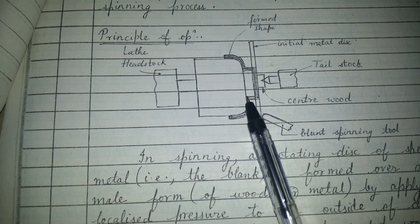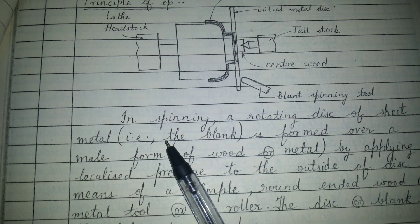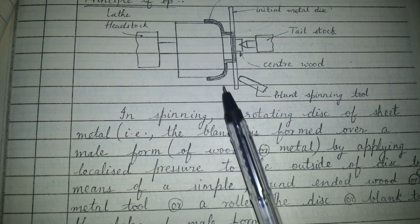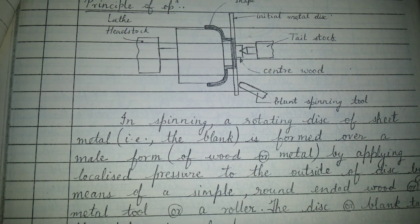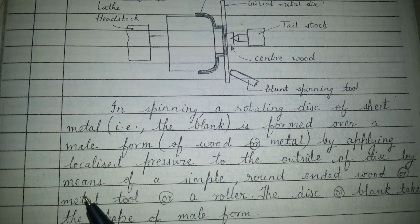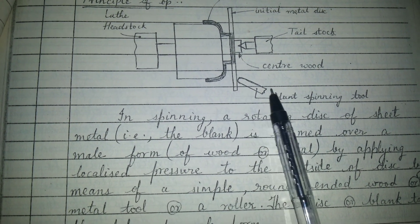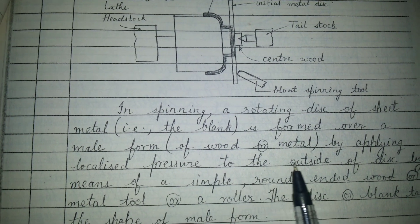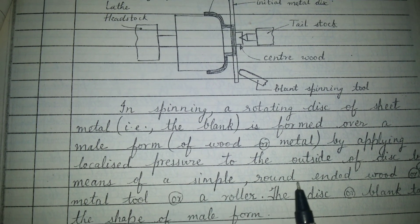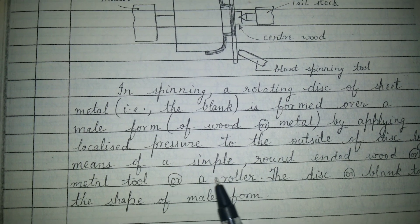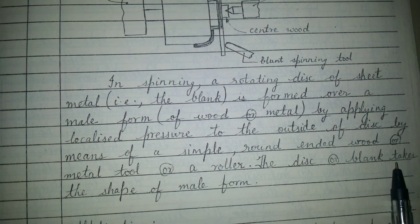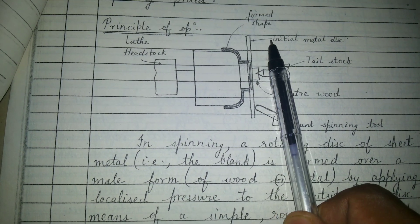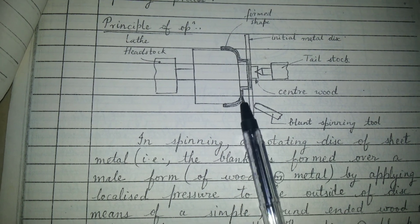As you can see, this dark one is the formed shape. In spinning, a rotating disc of sheet metal — that is the blank — is formed over the male form of wood or metal by applying localized pressure to the outside of the disc. As you can see, this blunt spinning tool is giving the pressure to the outside of the disc by means of a simple round-ended wood or metal tool or a roller. The disc or blank takes the shape of the male form, as you can see here.